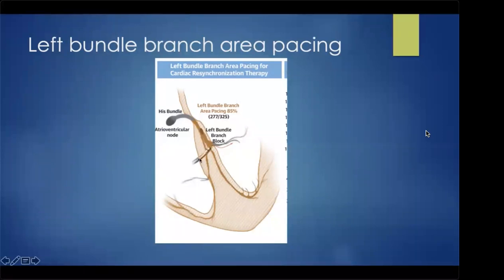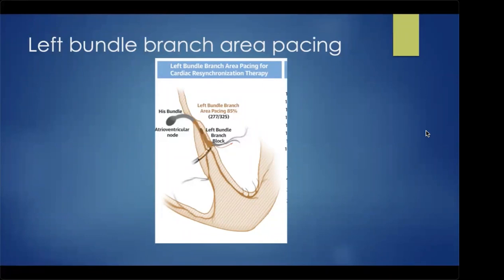Left bundle branch area pacing replaces the older His bundle pacing technique, which never caught on because the His bundle is a tiny, heavily insulated structure requiring high energy to capture with thresholds that can rise over time. If His capture is lost or block becomes more distal, the patient could be at risk since the lead is in the right atrium. The left bundle is about eight times larger, is not insulated, requires very low capture energy, and if capture is lost, the lead remains in the septum and still captures the ventricle. It is also an easier procedure.